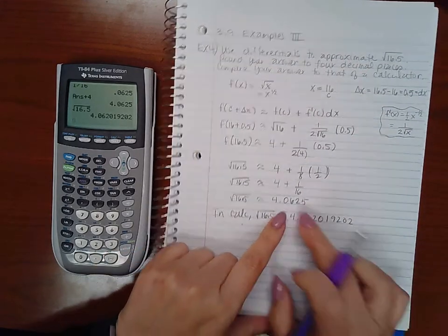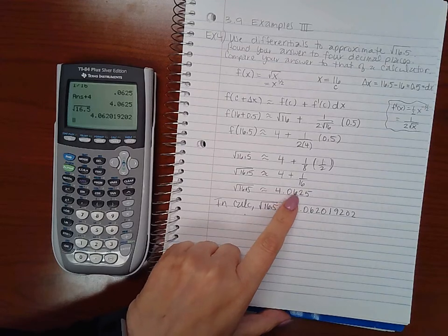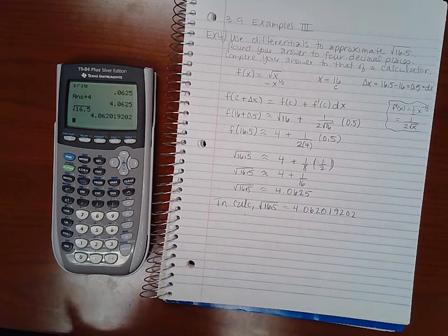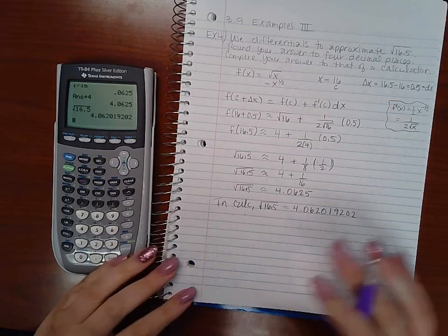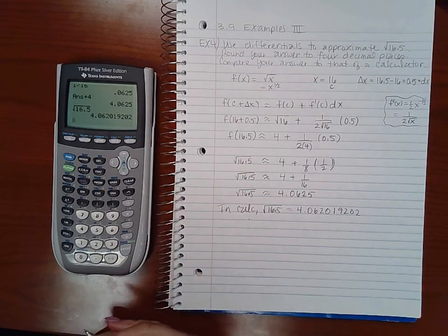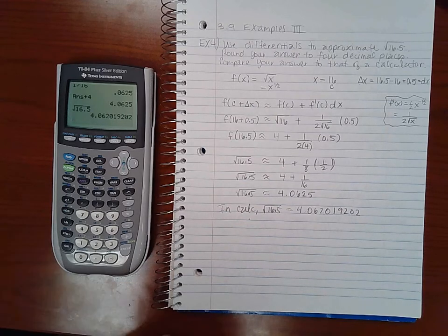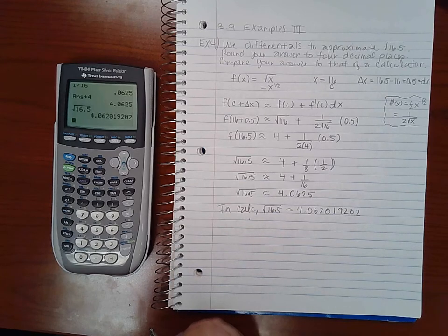So you notice that we were off only by the tens, hundreds, thousands, five ten-thousandths, which means you can use differentials to estimate what the actual value would be. They're very similar and not very far off, but they're just used to estimate, not used to find the exact answers.